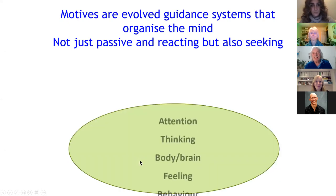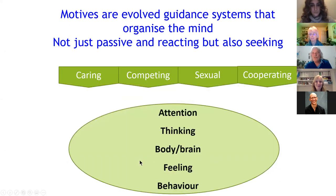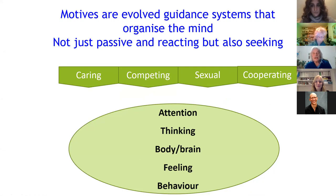The first thing is to recognize that we have a whole range of different motivational systems that have evolved in the human brain. We have a capacity for caring, we have a capacity for competing, for having sex and so on. These different motivational systems organize the brain and the mind in lots of different ways — the way you pay attention, the way you think, the way your body and brain works, the feelings you have and the behaviors you want to enact will be very dependent upon your motivation.